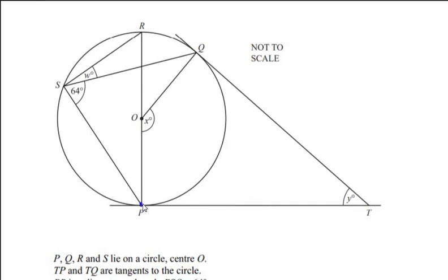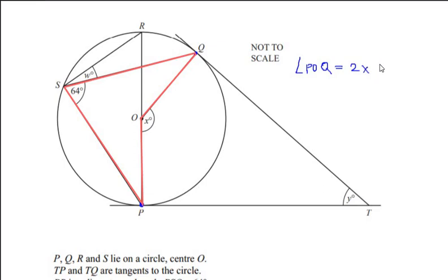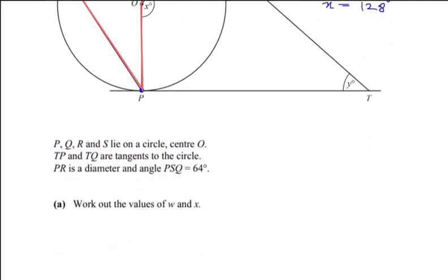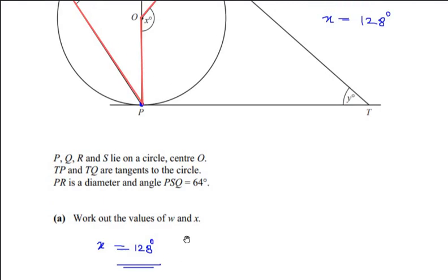Consider the two points P and Q. They make an angle at the center, which is angle POQ, and the same two points make an angle at the circumference, which is angle PSQ. According to the theorem, angle POQ equals two times angle PSQ. Since angle POQ is x and angle PSQ is 64 degrees, we get x = 2 × 64 = 128 degrees.